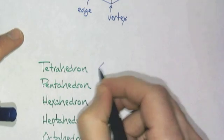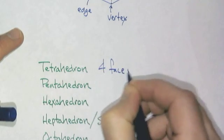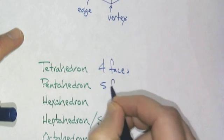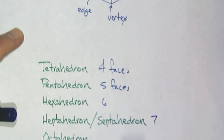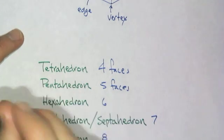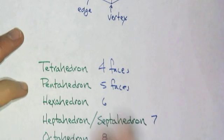A tetrahedron has four faces. Penta, five faces. Hexa, six. Seven, eight. You can guess. Now, I'm just telling you how many faces. That's all those words do. They don't exactly tell you what the shape is.